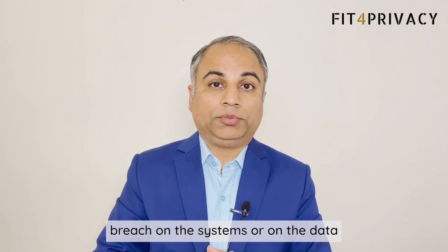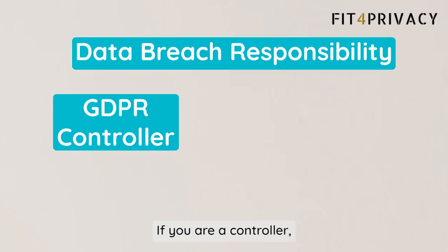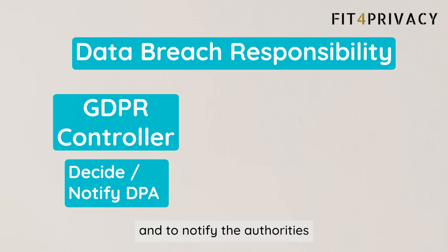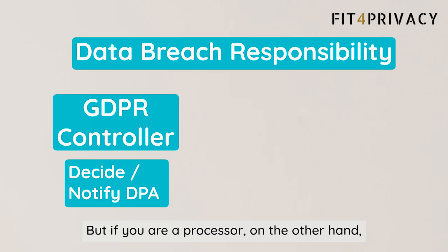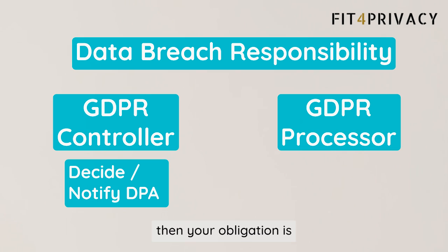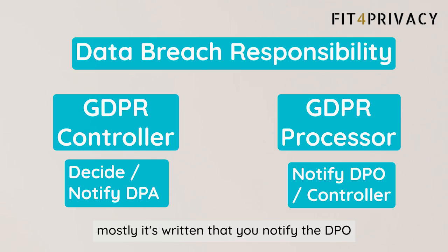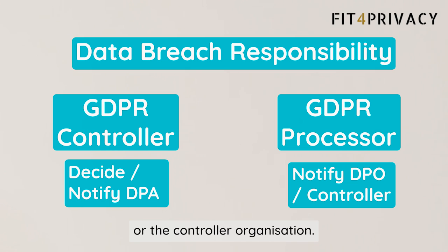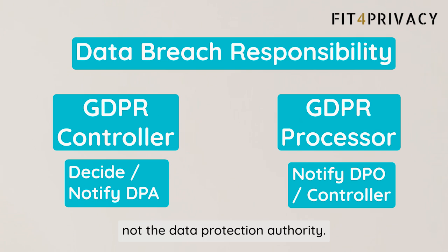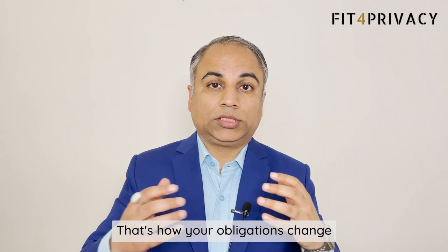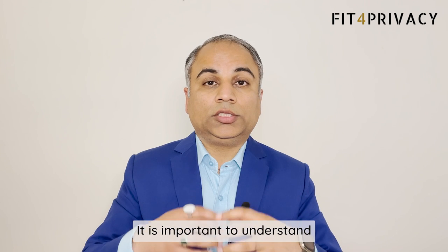Similarly, if a personal data breach happens on the systems or on the data you are processing — if you are a controller, it is your obligation to decide and notify the authorities, or even individuals if necessary. But if you are a processor, your obligation is as per the contract that has been signed. In that contract, it is mostly written that you notify the DPO or the controller organization — so your obligation is to notify the controller, not the data protection authority. That is how your obligations change based on your role.